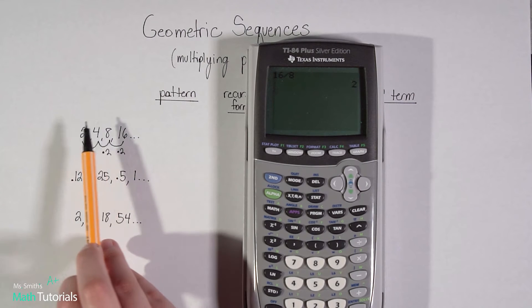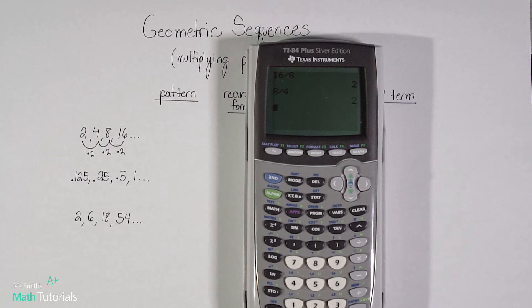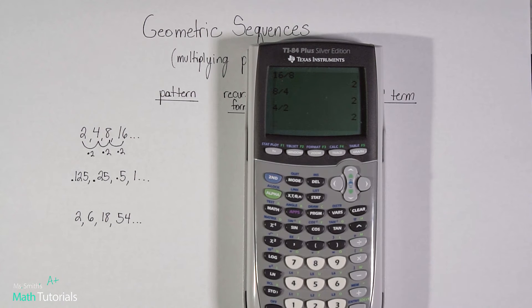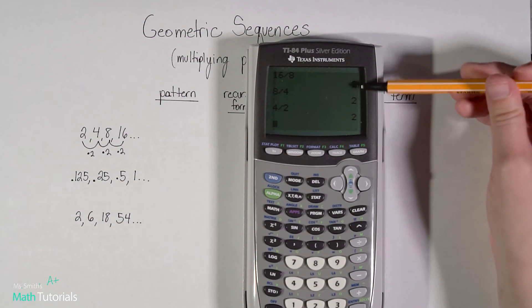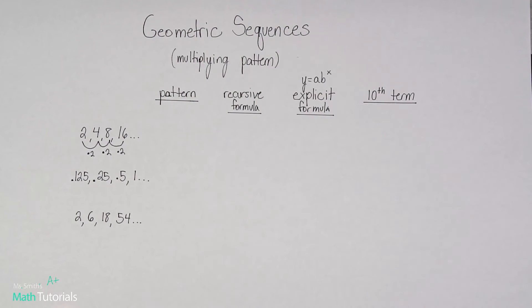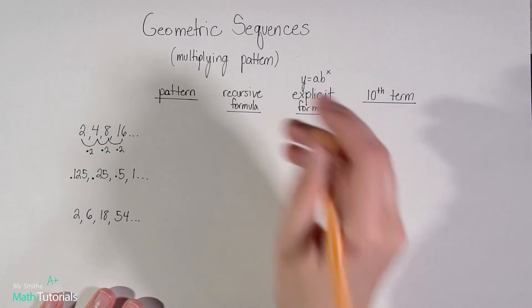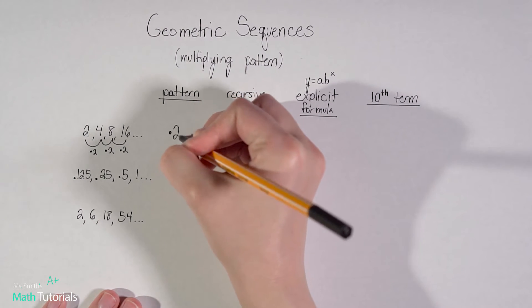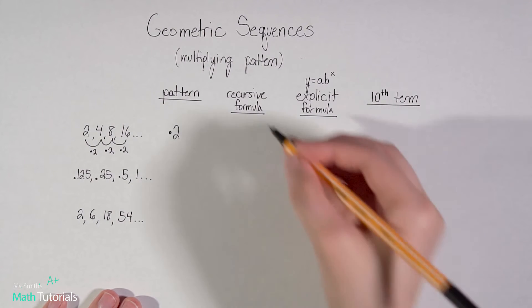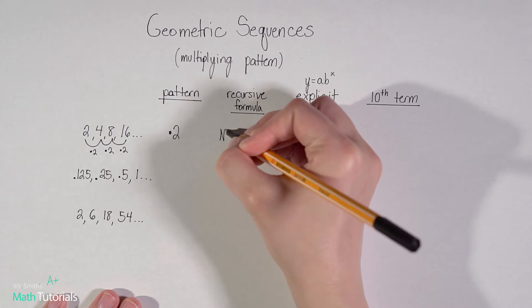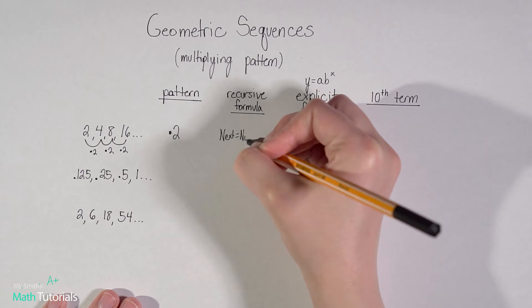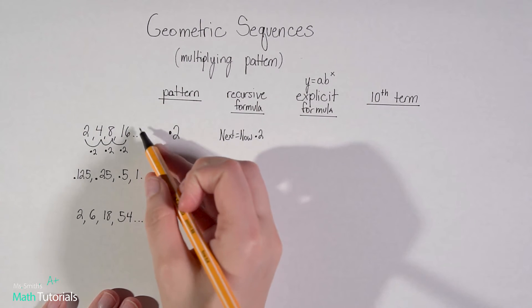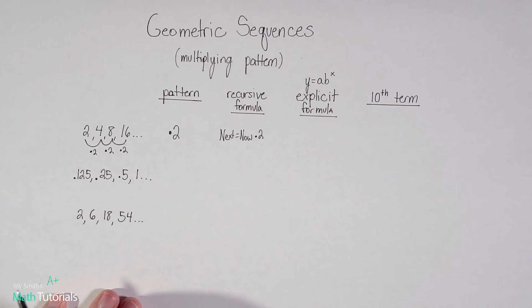So this number divided by the next number. And you'll see it gives us 2. Let's keep going. 8 divided by 4 also gives us 2. 4 divided by 2 also gives us 2. So that's another way to find that pattern if you weren't sure. It will come in handy. So for a pattern, this time we're multiplying by 2 each time. So our recursive formula, next equals now times 2.